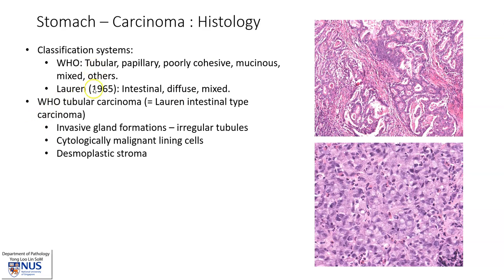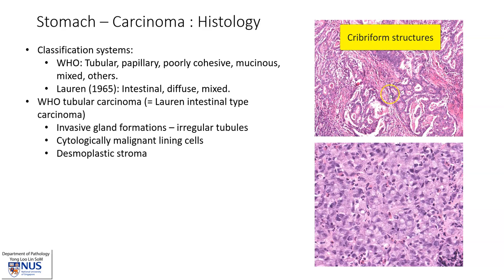The WHO tubular type carcinoma corresponds to the Lauren intestinal type carcinoma, and this is formed of invasive glands. We can see here the tumor composed of many glandular openings, with irregular tubules and sometimes cribriform structures with multiple glandular openings within a single larger opening. These are lined by cytologically malignant cells, and often the stroma in between is desmoplastic with a cellular appearance and some inflammation.